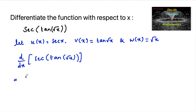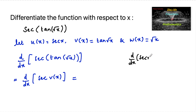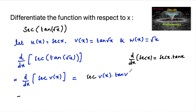This is equal to d/dx of secant of v(x). Since we know the differentiation of secant x is secant x times tan x, we can write secant(v(x)) into tan(v(x)), and by the chain rule we multiply by d/dx of v(x).